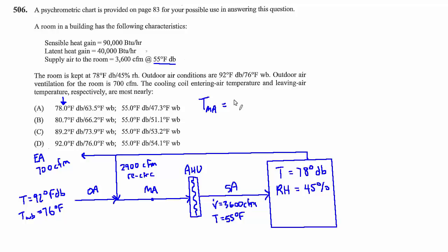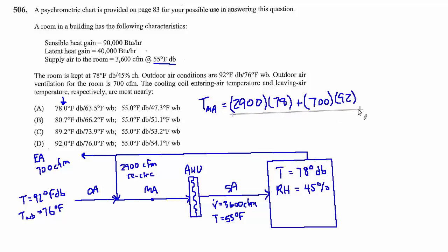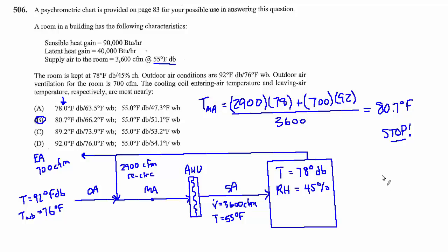The mixed air dry bulb temperature is calculated by mixing the recirculated air and the outside air: (2,900 CFM × 78°F + 700 CFM × 92°F) ÷ 3,600 CFM total = 80.7 degrees Fahrenheit. This is consistent with answer choice B. In a test environment, you could stop here — you have the answer.